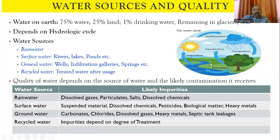The water gets evaporated from surface water bodies and through transpiration from vegetation, it gets condensed in the atmosphere and comes out in the form of precipitation — thereby the cycle goes. The different water sources are classified as rainwater, surface water, groundwater, and maybe some recycled water.